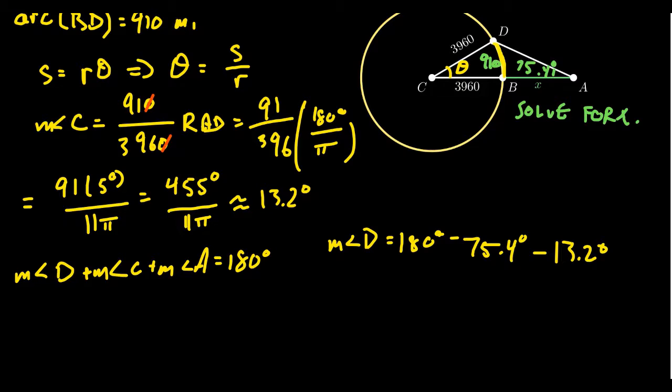So do make this subtraction here. If we take away 75.4 and 13.2 from 180 degrees, feel free to use a calculator to help you with the decimal arithmetic. We get the measure of angle D is going to equal 91.4 degrees.